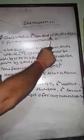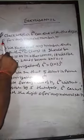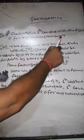Exercise 1.2, question number 5: Check whether 6 to the power n can end with the digit 0 for any natural number n.